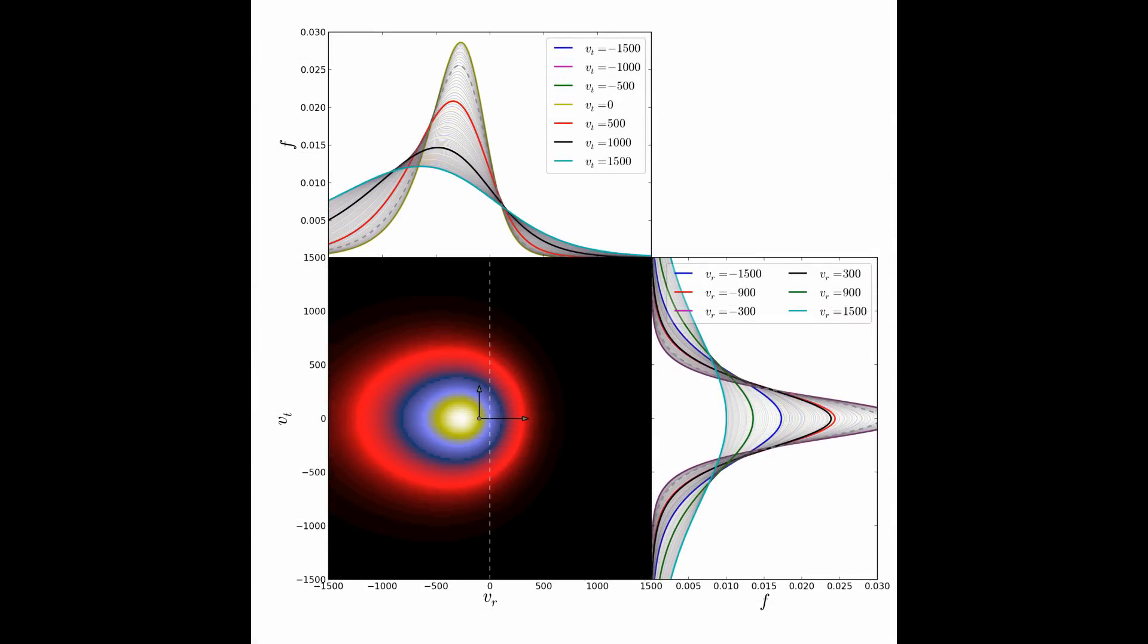The infall component at each radius can be well described by a 2D skewed t-distribution, parameterized by characteristic infall velocity, radial and tangential dispersions, and two skewness and kurtosis parameters that are insensitive to halo mass.